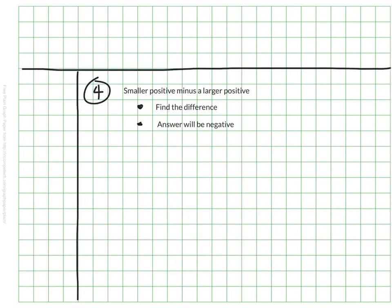The final situation is having a smaller positive and subtracting a larger positive from it. In that case, we would find the difference, but the answer would be negative. So maybe 5 minus 7. The difference between 5 and 7 is 2, but because we are subtracting something more than what we have, our answer would be negative 2.